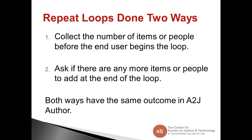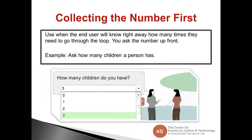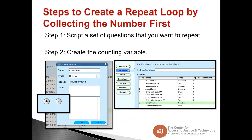Repeat loops can be done in two ways. The first way is to collect the number of items or people before the end user begins the loop. The second way is to ask if there are any more items or people to add at the end of the loop. Both ways have the same outcome in A to J Author. The first way — collecting the number first — is used when the end user will know right away how many times they'll need to go through the loop, such as asking how many children a person has.